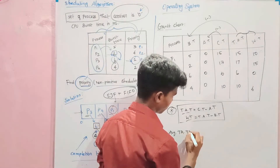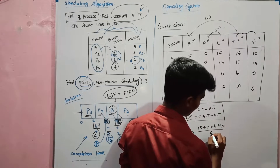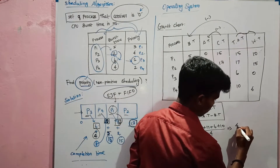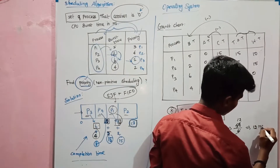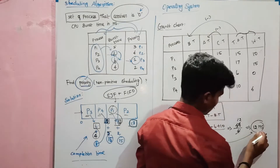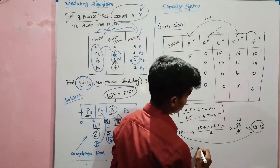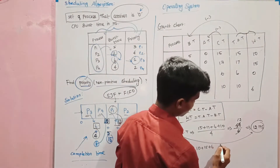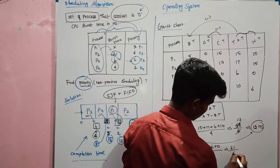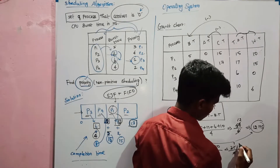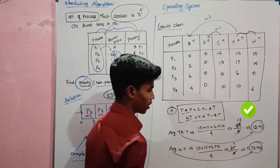Number of values is 4. TAT values: 16, 75 — sum divided by 4. Average TAT is 12 milliseconds. For waiting time: sum of all values — 10 plus 15 plus 25 plus 31 — wait, 0 plus 15 plus 25 plus 31 divided by 4 equals 7.75 milliseconds. So average waiting time is 7.75 milliseconds.